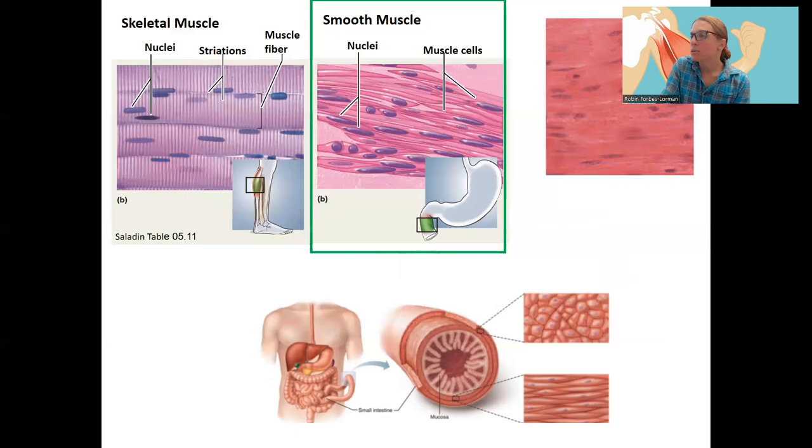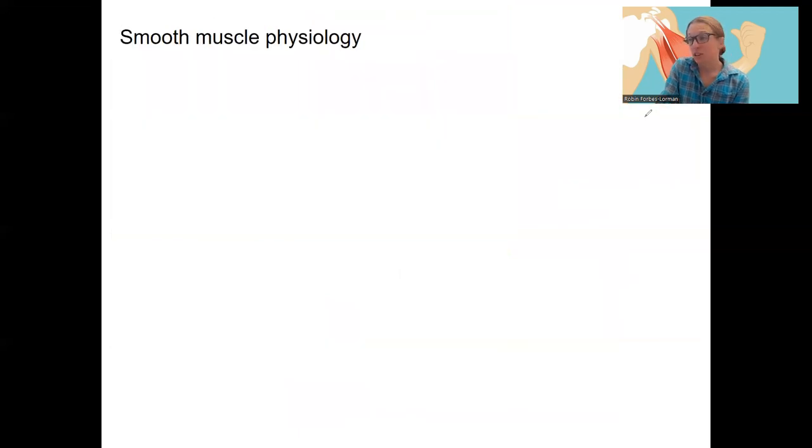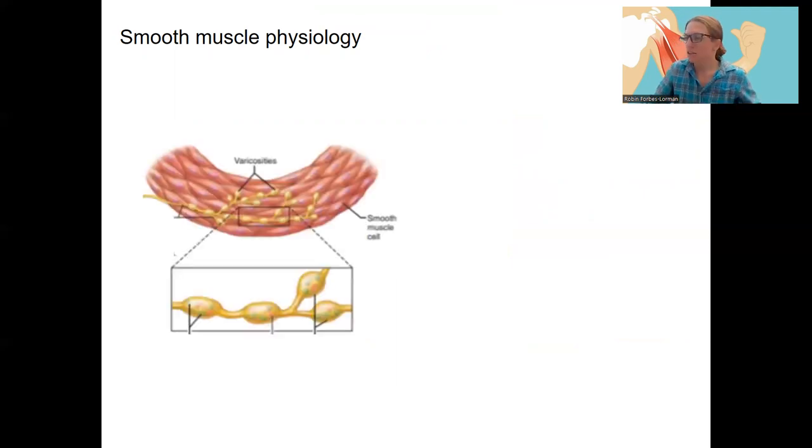Okay. So one more slide for smooth muscle, a little bit about the physiology. That's quite different than skeletal muscle. Now I can't spend a lot of time on it, but it is different in terms of that neuromuscular junction we talked about in skeletal muscle is not present in smooth muscle. Instead there are these varicosities. So right here, it's written a little bit bigger here. Varicosities.